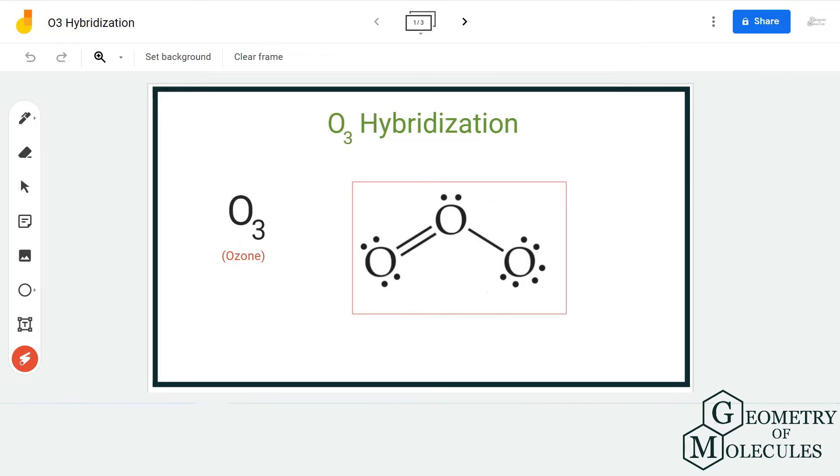So I am going to find out the steric number for O3 molecule, which can help us find out the hybridization in under two minutes. For the steric number, we need to know the number of sigma bonds that the central atom is forming and the number of lone pairs.